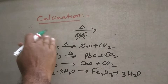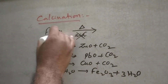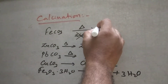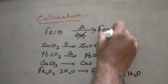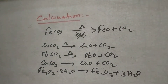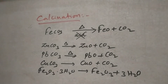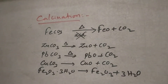Take ferrous carbonate (FeCO3) for example. On heating in the absence of air, you get FeO plus carbon dioxide. Heating in the absence of air — that we can call calcination.